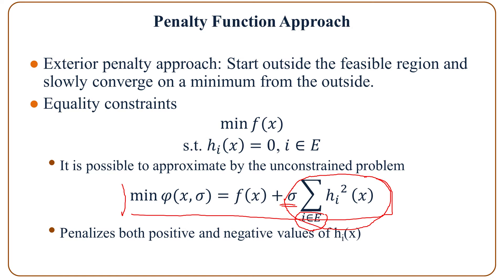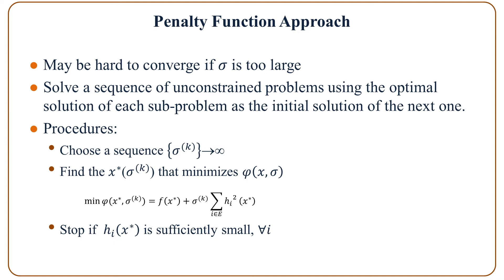You also have sigma times the sum. This optimization problem penalizes both positive and negative values of each h_i. It may be hard to converge if sigma is too large. So here we solve a sequence of unconstrained optimization problems, using the optimal solution of each subproblem as the initial solution of the next one.